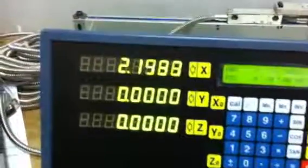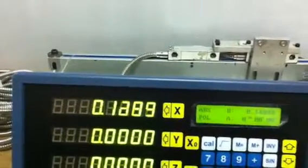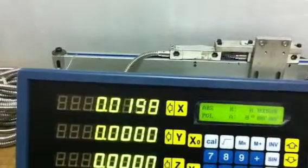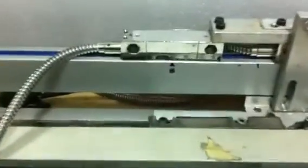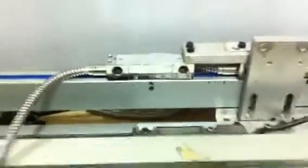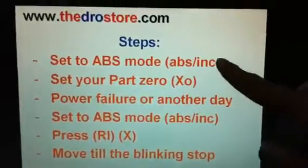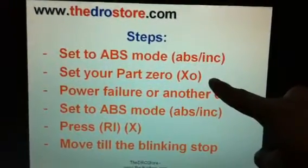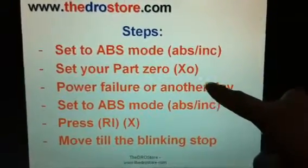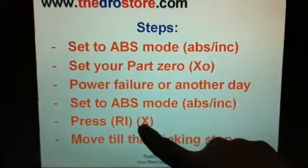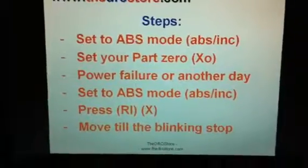Now if we go back to zero, we are at the datum position again. So to summarize: these two steps are to save the datum. After using it, if there is a power failure or you want to continue another day, you just recover it back by pressing RI, selecting the axis that you want, and moving until the blinking stops.